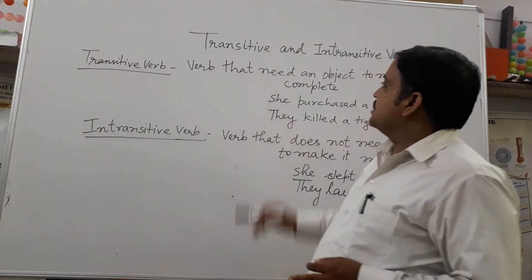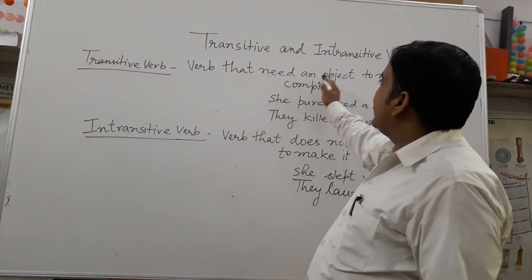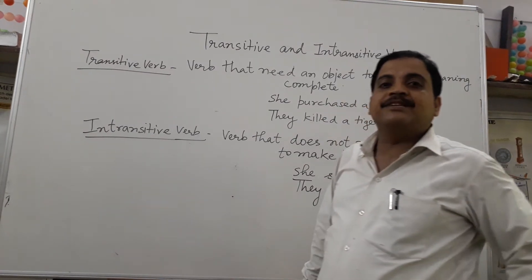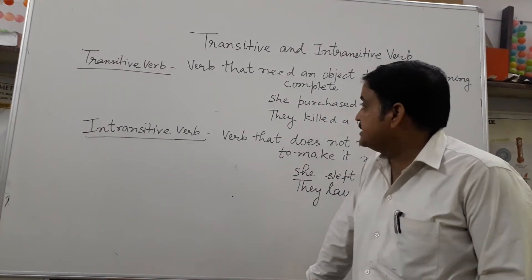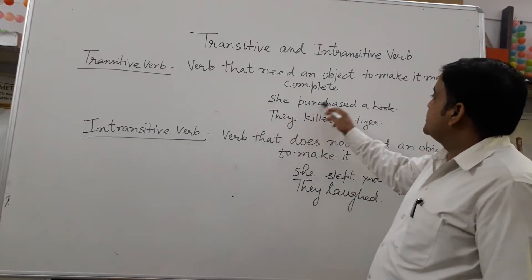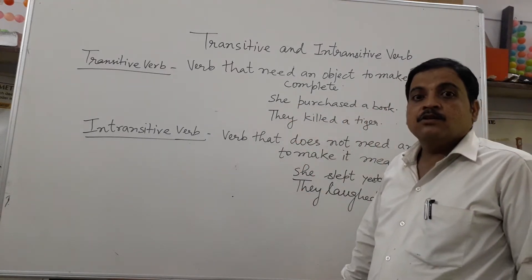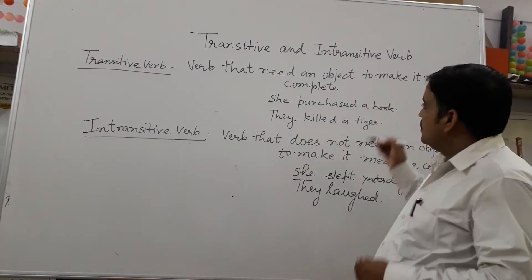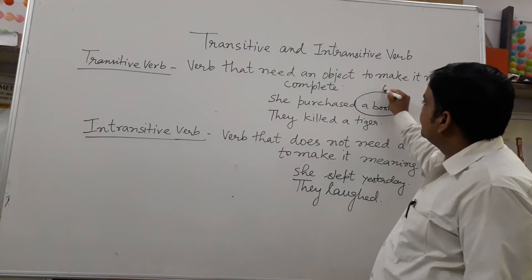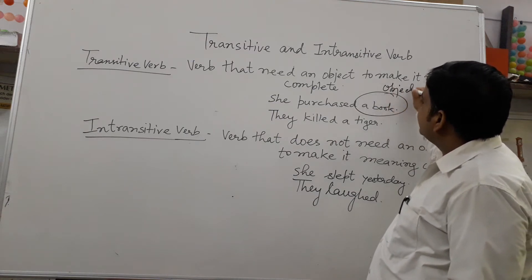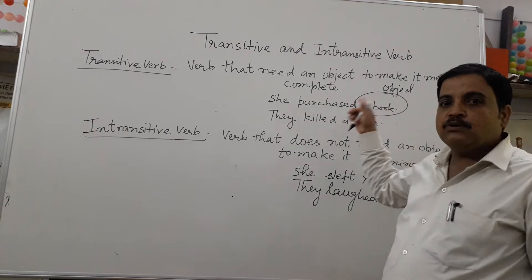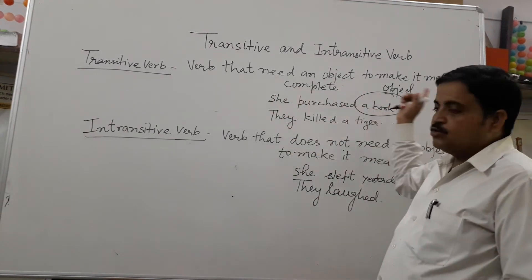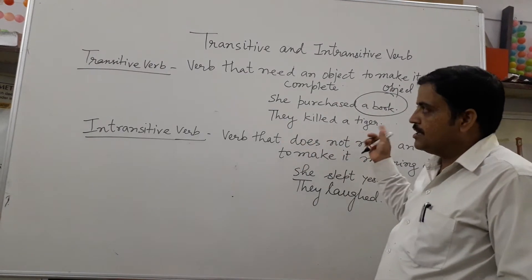Transitive Words are such words that need an object to make its meaning complete. Such a verb requires an object to be complete. If I ask what was purchased, then the answer will be an object. An object is required. Such a verb when completed with an object — such verbs are called Transitive Words. A verb that needs an object to make its sense complete is called a Transitive Word.